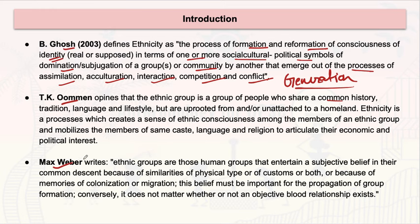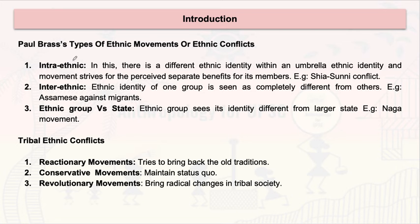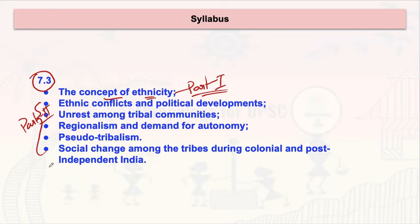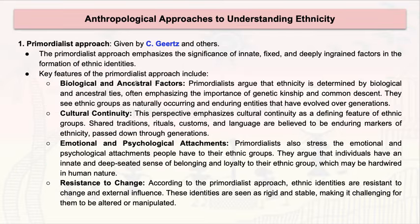Max Weber also gave definitions of ethnicity, which we will discuss in detail when covering the various anthropological approaches. You can pick any of these definitions to write in your exam. Regarding Paul Brass, he defined types of ethnic movements and further classified ethnic conflicts among tribal communities into reactionary, conservative, or revolutionary types. This information will become more relevant when we cover ethnic conflict and political development among tribal communities in the next part.